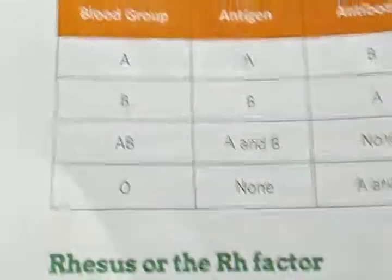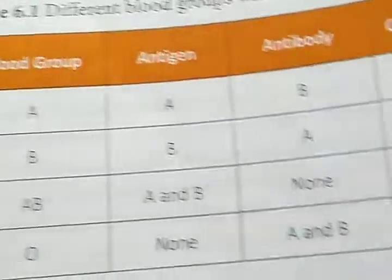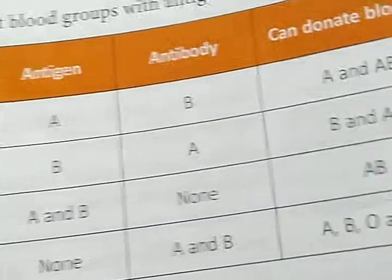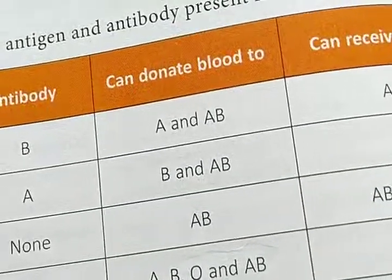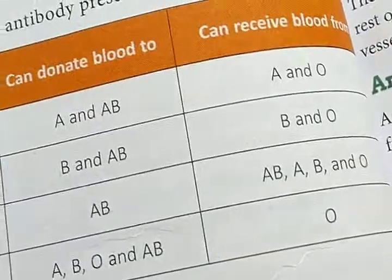Look at the chart here. Blood group A has antigen A, antibody B, and can donate blood to A and AB.